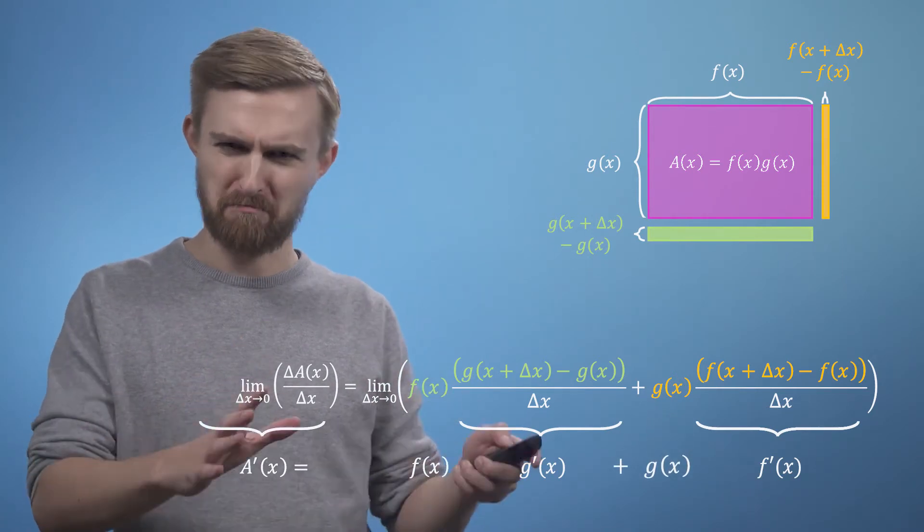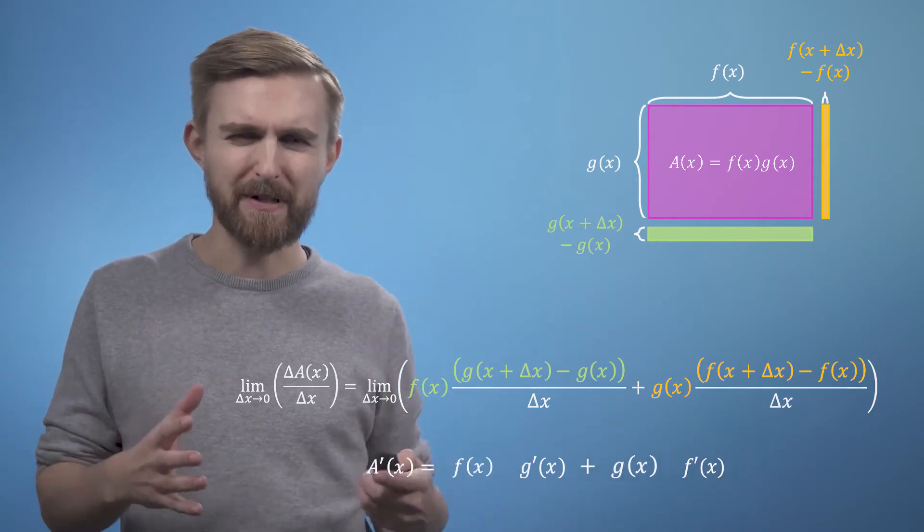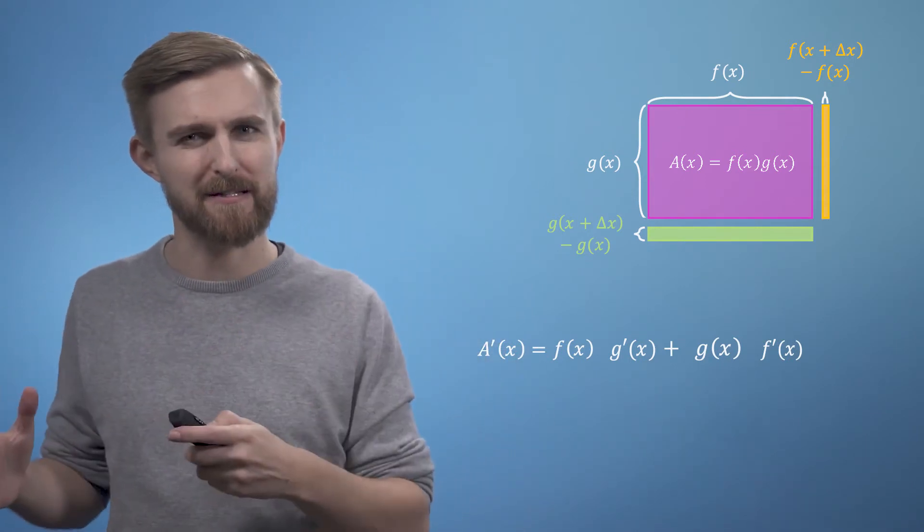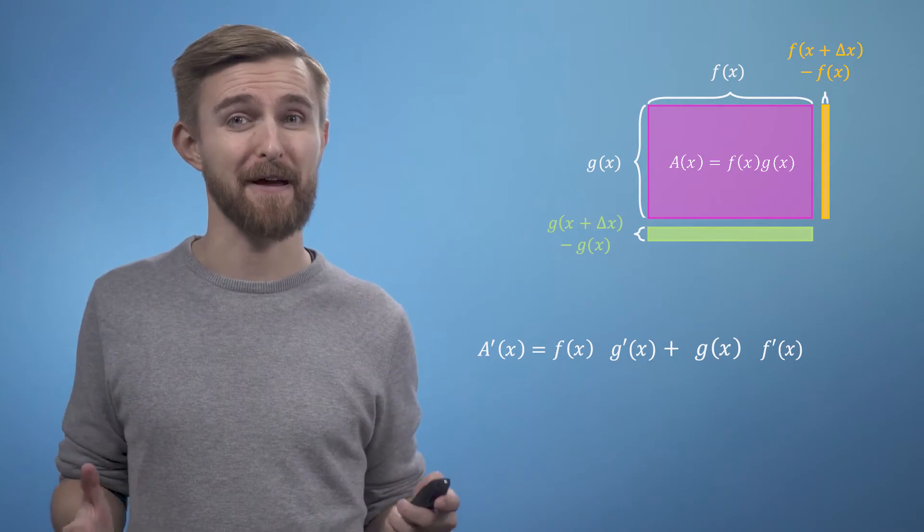Which has now just been reduced to this. The derivative of a of x is just f of x times the derivative of g of x, plus g of x times the derivative of f of x.